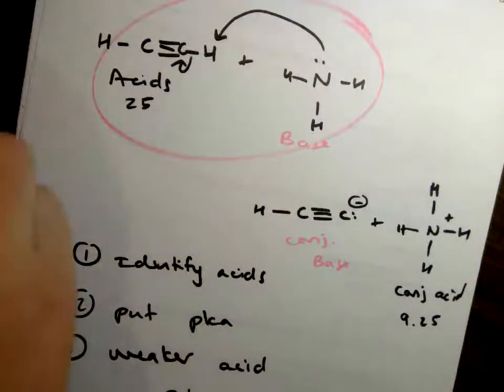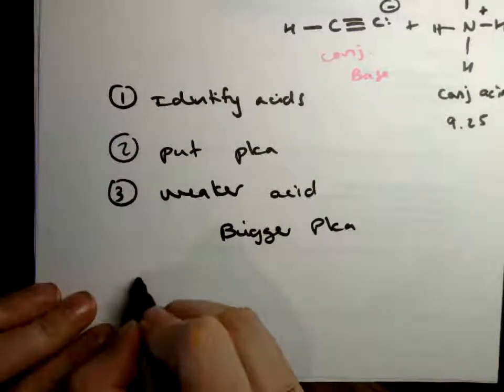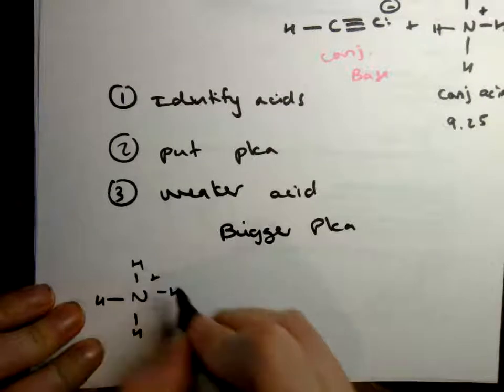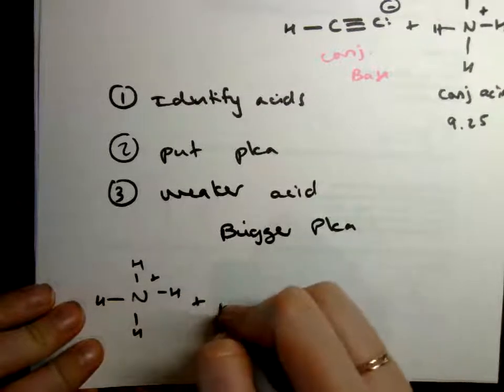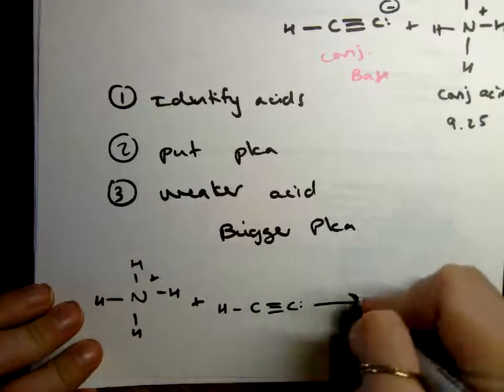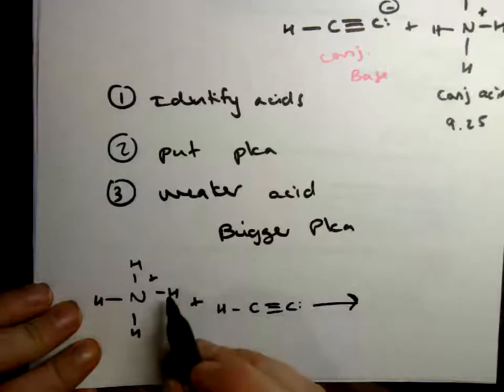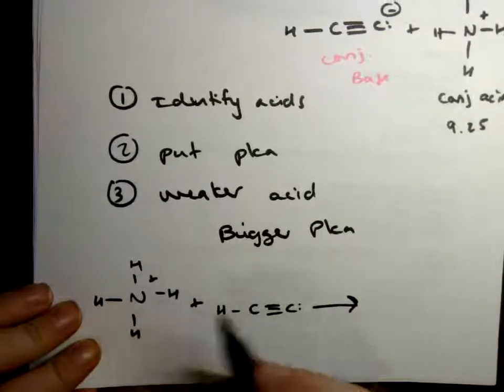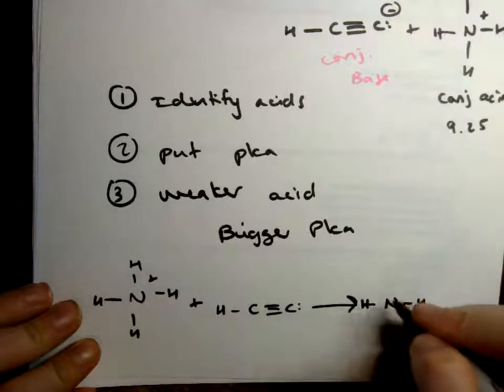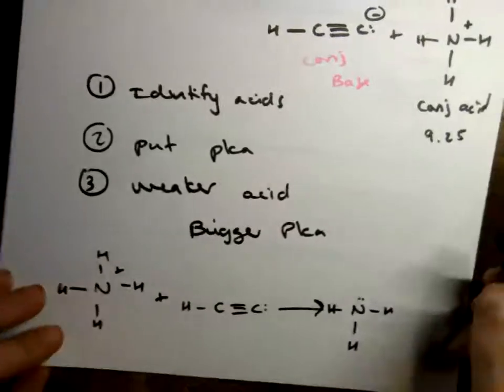So the bigger pKa is going to be weaker acid, which means we're going to favor this side. So if you were drawing that reaction out the way it's going to proceed, these will actually be the reactants. And this lone pair will come over and steal a proton. That bond will break and leave a lone pair behind. And you'll end up with this side favored.